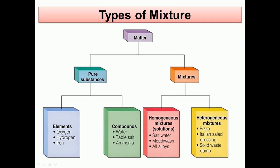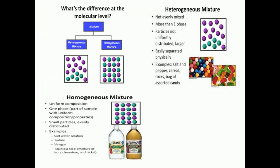Mixture is divided into two: one is homogeneous mixture, the second one is heterogeneous. Homogeneous mixtures include solutions, salt water, mouthwash, and alloys. Heterogeneous mixtures include pizza, Italian salad dressing, and solid dump. We can easily differentiate between them. What's the difference at molecular level? This is mixture, heterogeneous and homogeneous. Look at the composition: in heterogeneous mixtures, the particles are not evenly mixed and not uniformly distributed. While in homogeneous mixtures, the particles are uniformly and evenly distributed in a proper manner.